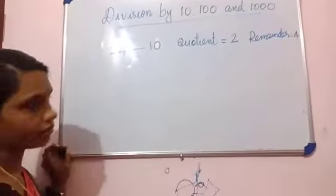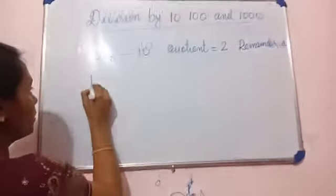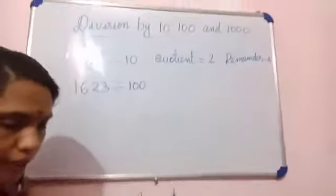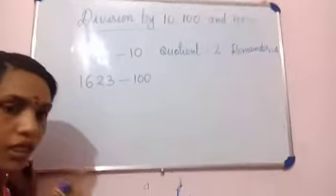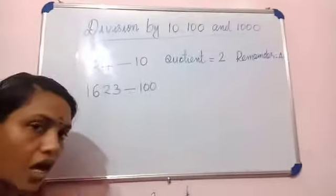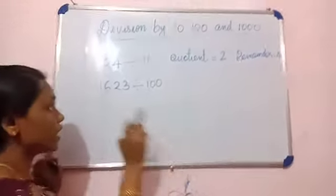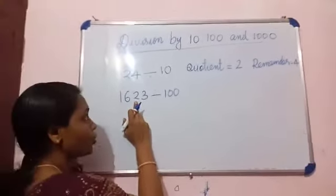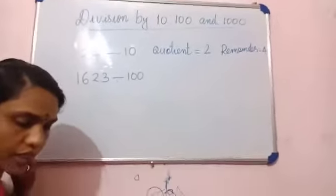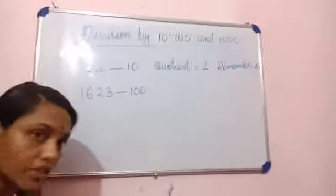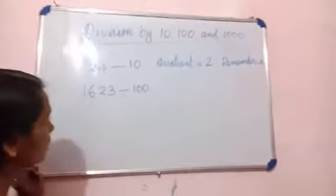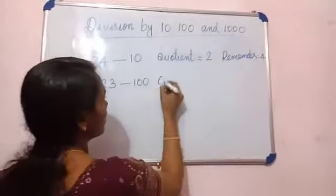Next, division by 100. Let's check one example: 1623 divided by 100. If the divisor is 100, the last two digits of the dividend — that means 23 — give the remainder. So 23 is the remainder.